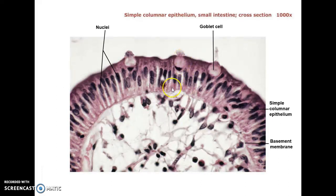This is another view of those columnar cells in the small intestines. You don't see the villi so clearly, but you do see the nice goblet cells on the surface.